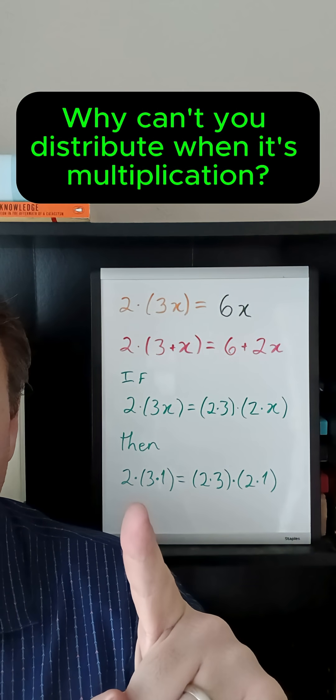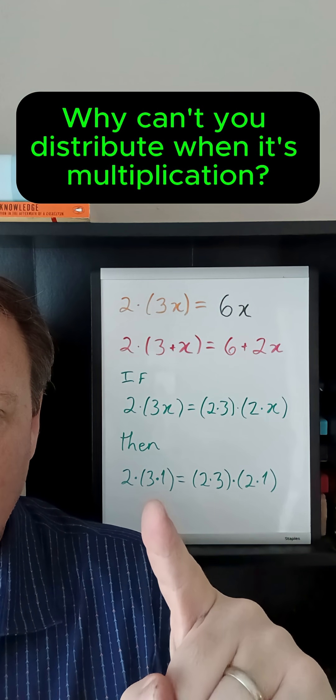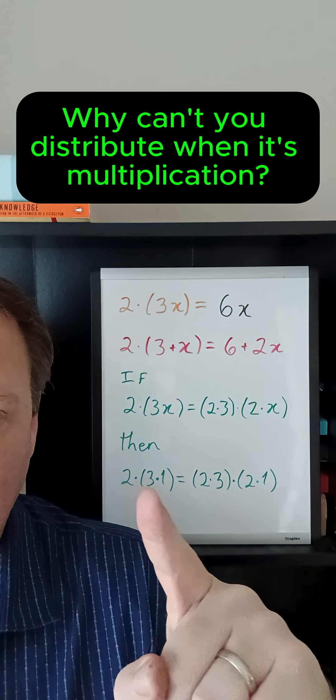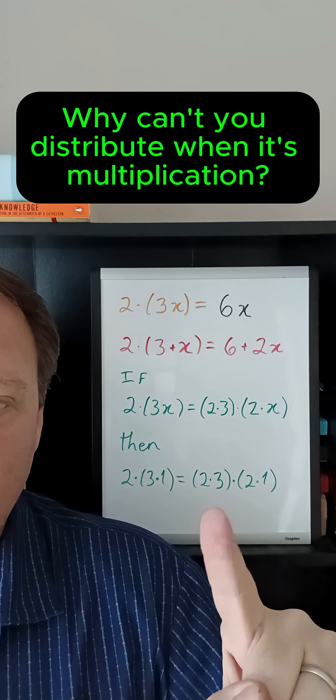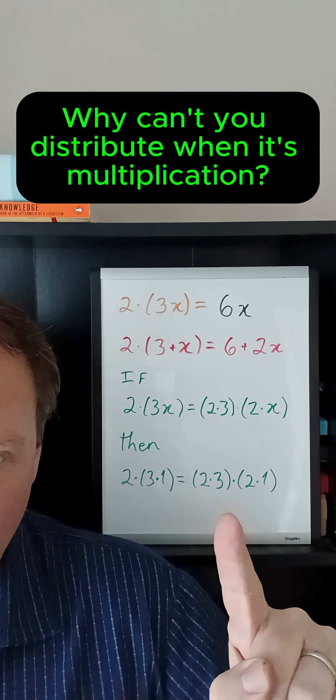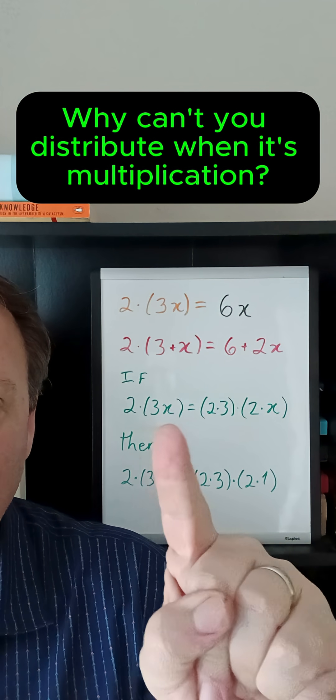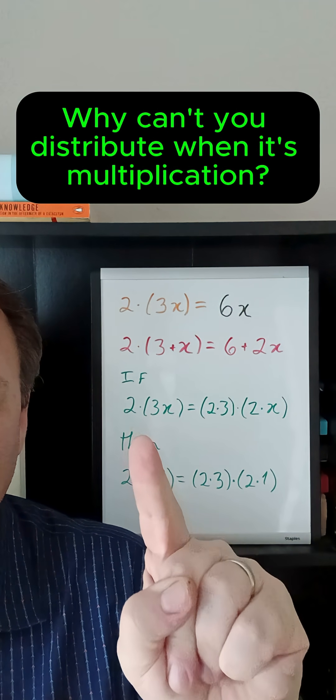So if we just set x equal to one, then here you would get two times three times one. If you compute that out, you'll get six. Over here, you'll get six times two, and that is equal to 12, of course. And so you get a false equation. So we must know that this form of distribution is wrong.